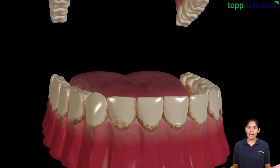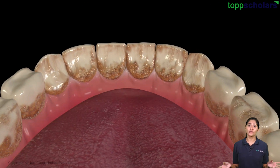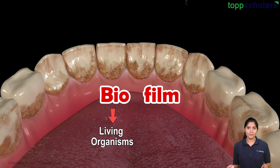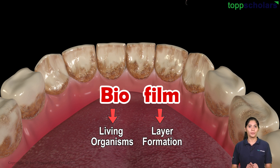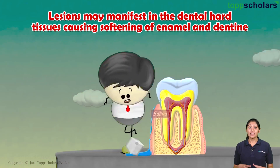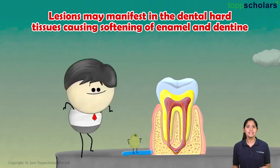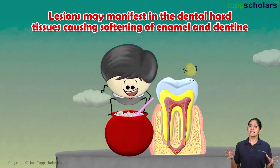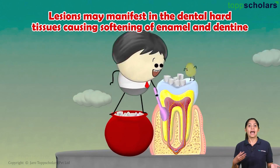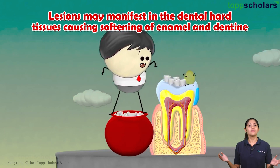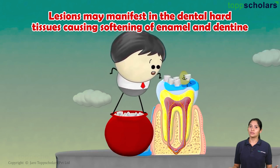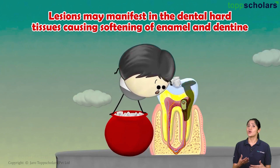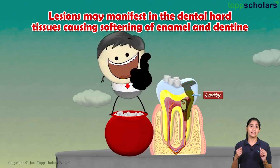Masses of many bacterial cells come together to form a biofilm. Here, bio refers to living organisms and film refers to layer formation. As these bacteria form a biofilm, it prevents the saliva from reaching the tooth surface. Thus, the saliva cannot neutralize the acid as the plaque covers the teeth. This lesion manifests in the dental hard tissues, causing gradual softening of enamel and dentine.